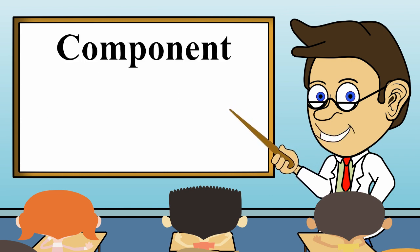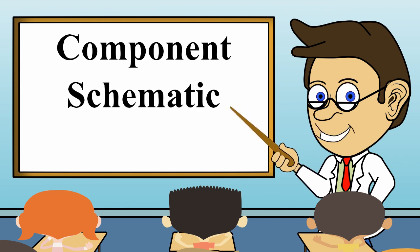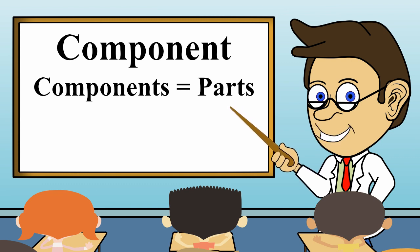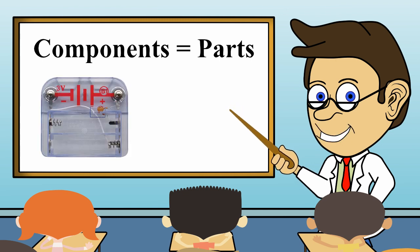In electricity, we call parts components. Let us take a closer look at the components in your snap circuits kit. This component is a battery holder. This component is a switch.